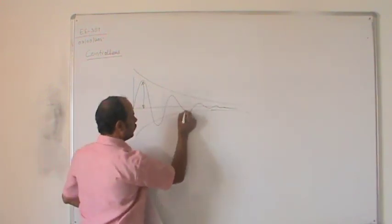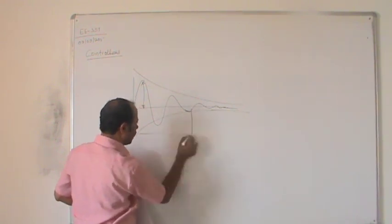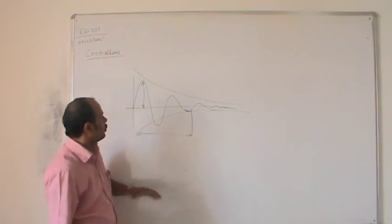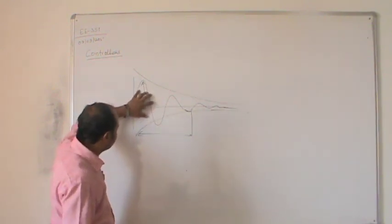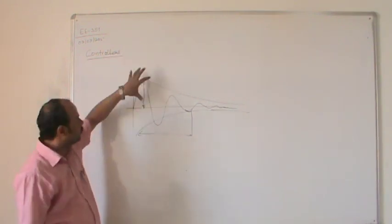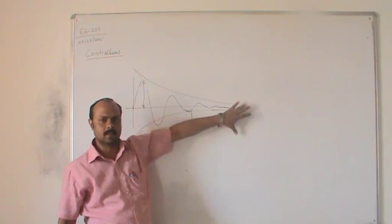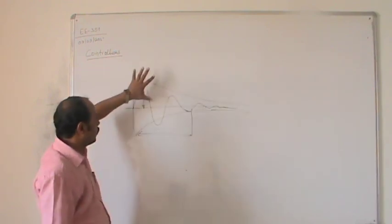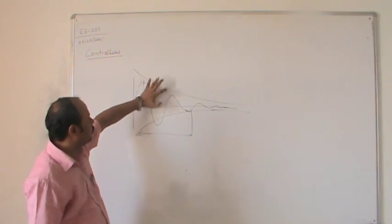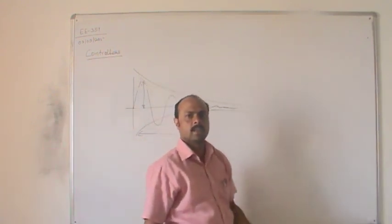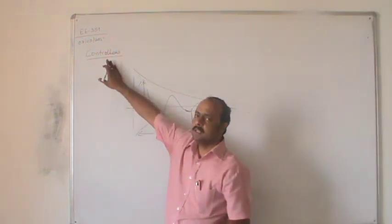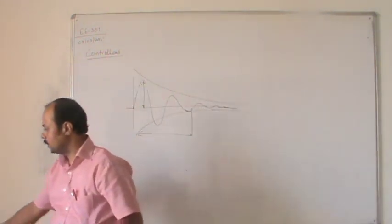So if the response has gone here, then after this particular time period it is entering into the steady state. To improve the system, that means to reduce this peak overshoot — if we reduce the peak overshoot, it will reach the steady state faster. So for controlling these transients, we will have to make some extra circuit corrections inside the control system, and that particular circuit is called a controller.